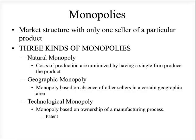There are three types of monopolies. There's a natural monopoly, where costs are minimized by having a single firm produce the product; a geographic monopoly, with the absence of other sellers in the area; and a technological monopoly, where essentially there's a patent protecting the firm.